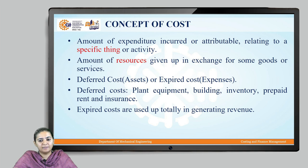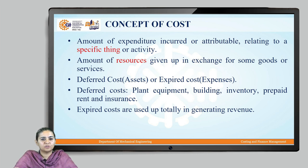Before we go to the classification, let us first understand the concept of cost. Cost is nothing but the amount of expenditure which is incurred or attributable to a specific thing or activity. If you recall, we used to have the barter system wherein people exchanged goods for goods or services. Cost is also the amount of resources given up in exchange for some goods or services. When a cost is incurred, we spend money to buy plant, equipment, building, inventory, rent, or insurance.